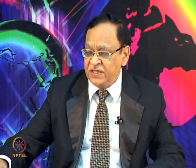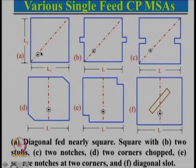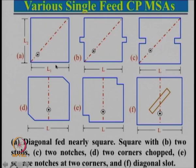We also looked into how we can get circular polarization using single feed microstrip antenna, and we will continue from there. These were nearly square patch configurations. This length is L1, this length is L2, and the ratio of L1 to L2 should be approximately equal to 1.01 to 1.10 depending upon the bandwidth of the antenna, which is determined by the substrate parameters.